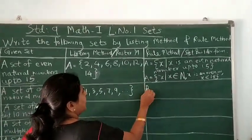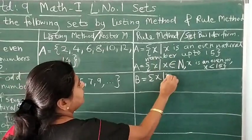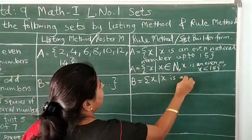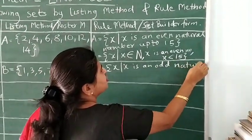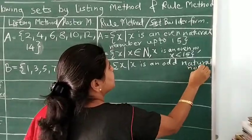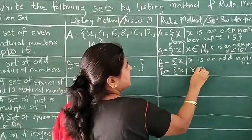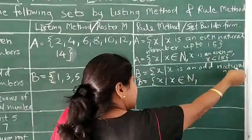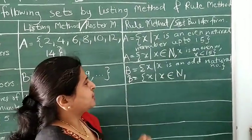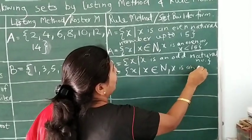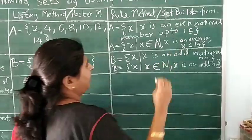By rule method, we give the same name: B is equal to opening bracket, X, vertical line, X is an odd natural number. That is the first way in words. Or using symbols, we can write X such that X belongs to N, meaning X is an element or member of the natural number set, and X is an odd number. In this way we can write Set B.